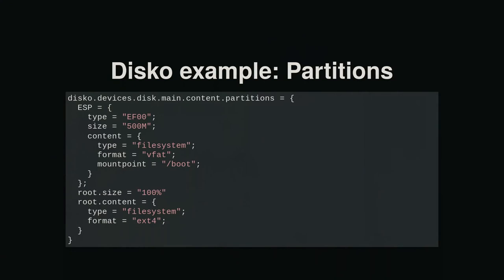Because it's NixOS config, you can split it over multiple files. This is basically what the partition table looks like: we have an EFI partition with 500 megabytes and a boot file system, with the mount point specified. Then you have the root partition at 100% with an ext4 file system. Very basic — I guess everybody expects that's how it should work in NixOS.